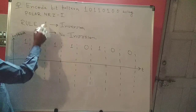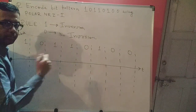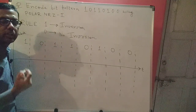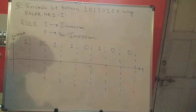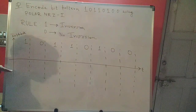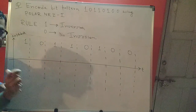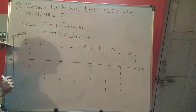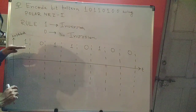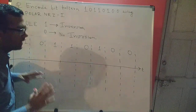The rule is: if you see a 1, you need to invert your signal pattern. Inverting means if you are above the time axis you will go below the time axis and proceed. If you see a 0, there will be no inversion — if you are above the time axis you remain above, and if you are below you remain below.